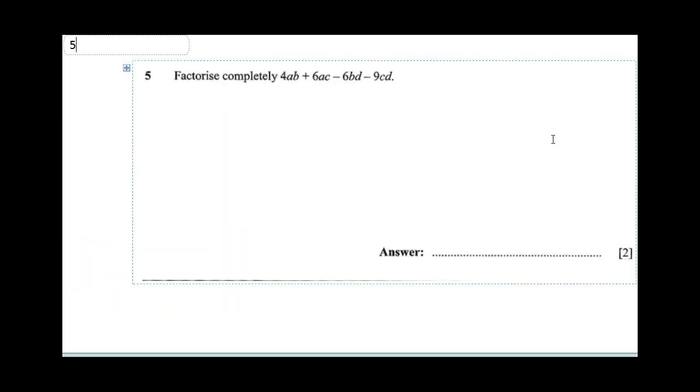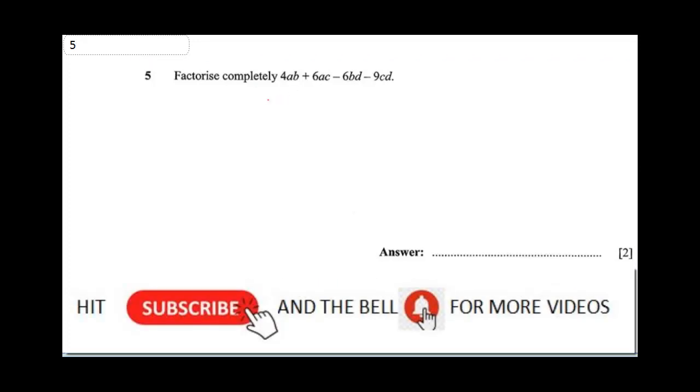Question 5 says factorize completely the equation. I'm going to say 4ab + 6ac - 6bd - 9cd. What is common here? 2a is common, so you bring 2a out: 2a(2b + 3c). Let's check: 2a × 2b = 4ab, 2a × 3c = 6ac. Now minus, 3 is common and d is also common. So we'll have -3d(2b + 3c).